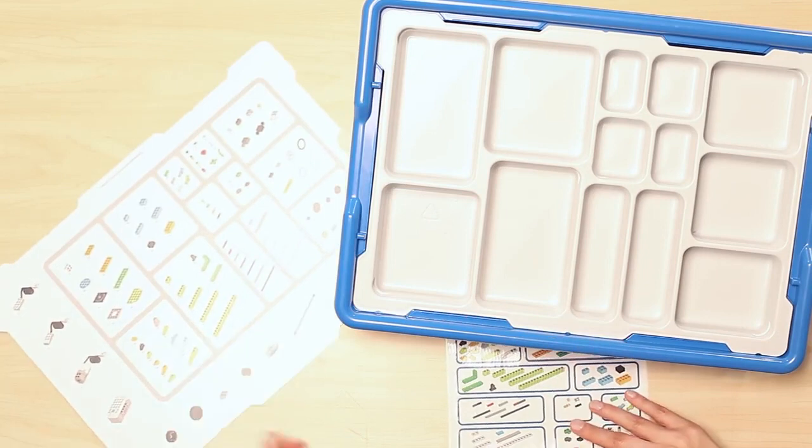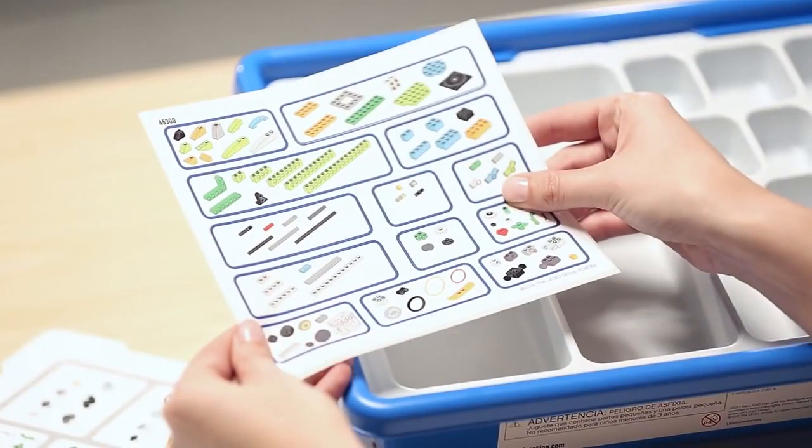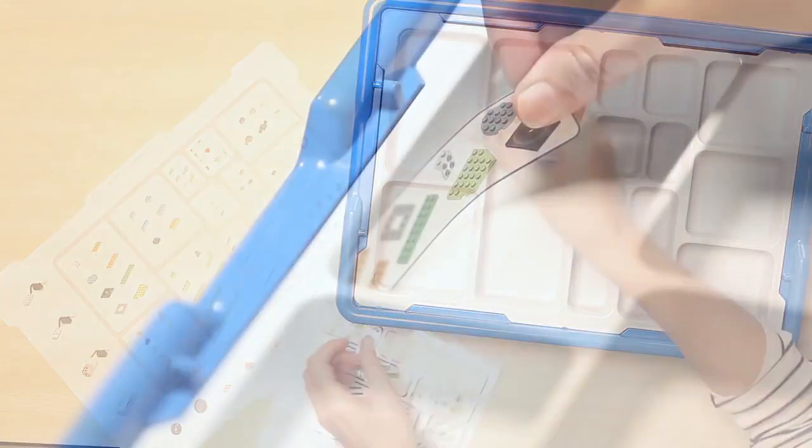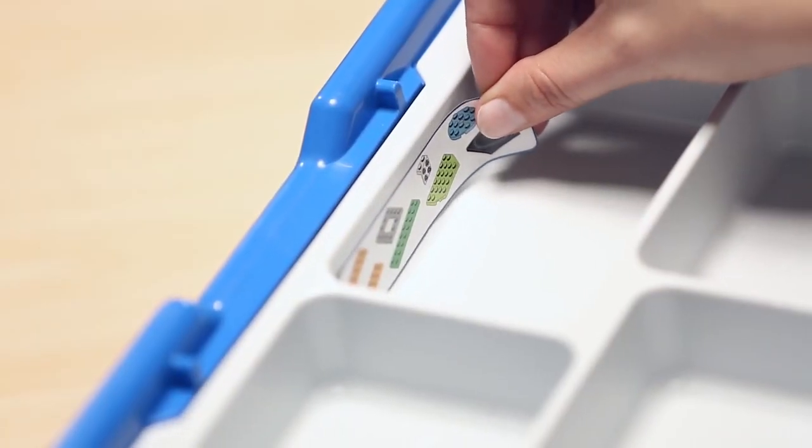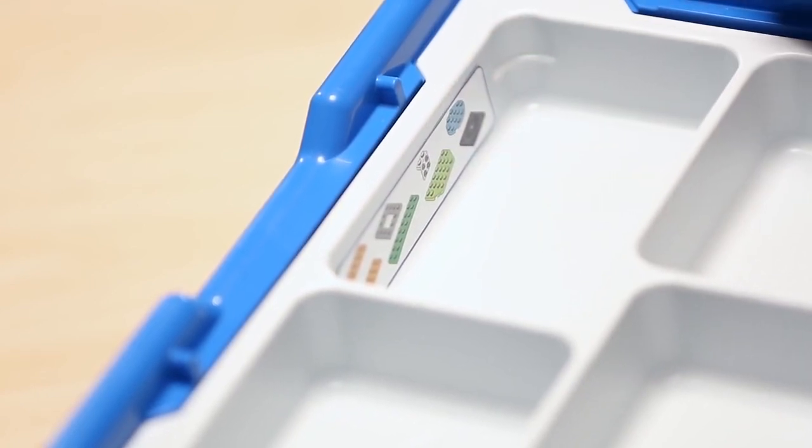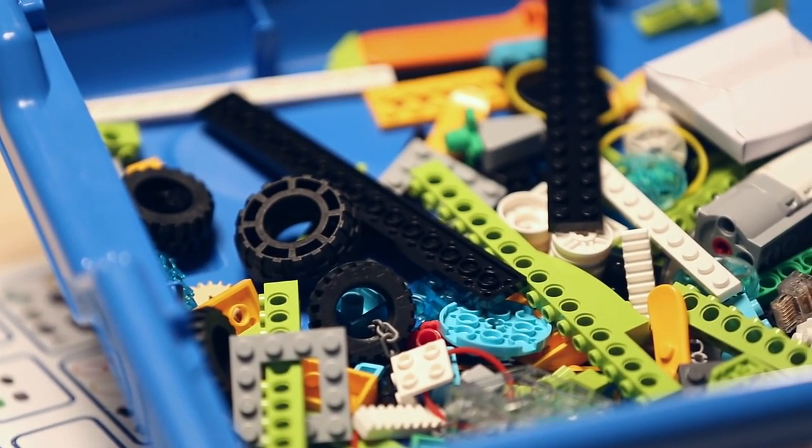In the box you will also find a sticker sheet with images of the core set bricks printed on them. These stickers are to be placed on the sides of the sorting tray to make searching for and putting away the bricks as quick and easy as possible.